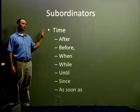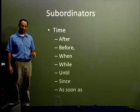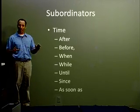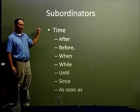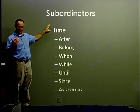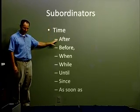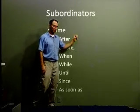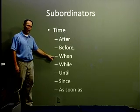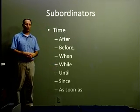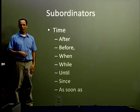Subordinators are the words at the beginning of a dependent clause. There are a lot of them — here's a short list. A lot of them have to do with time or showing the verb's relationship to time, followed by a subject and verb. Examples include: after, before, when, while, until, since, as soon as. Those would all be examples of subordinators we could use in a complex sentence.